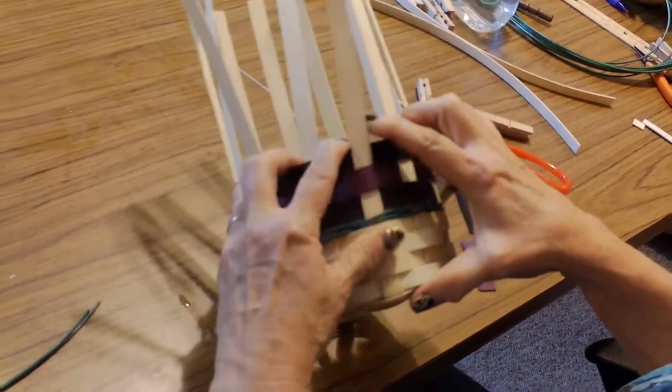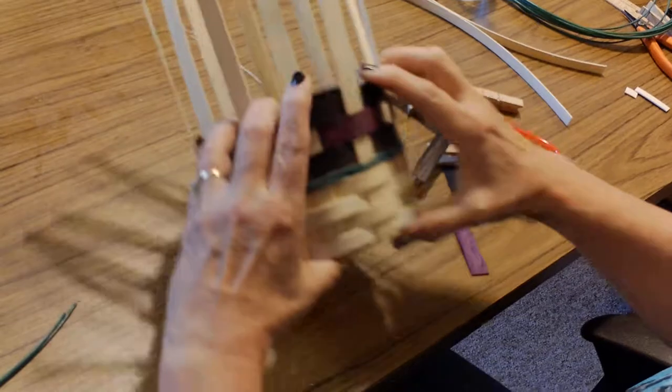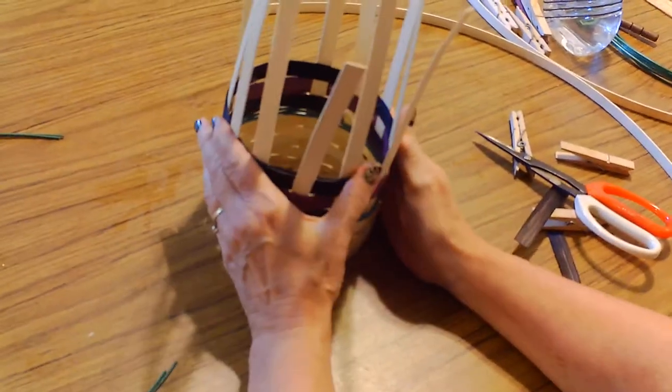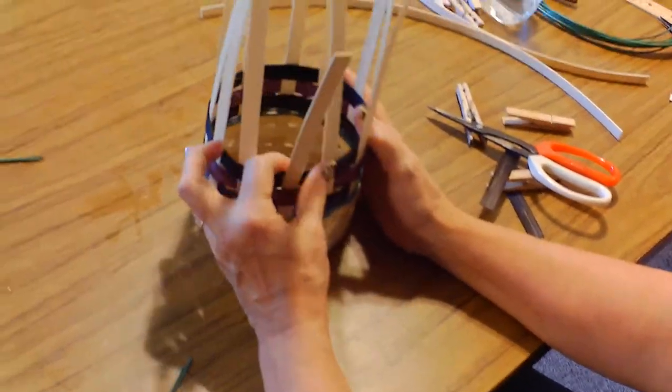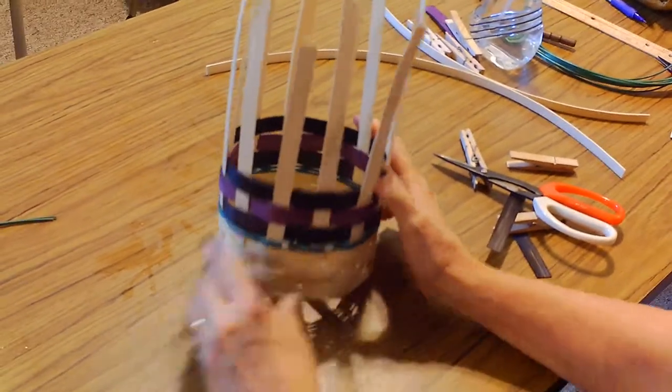Cut and tuck that in again. There we have our three rows of colored in the wider pieces, and I will show you the next segment how to do the twining again.